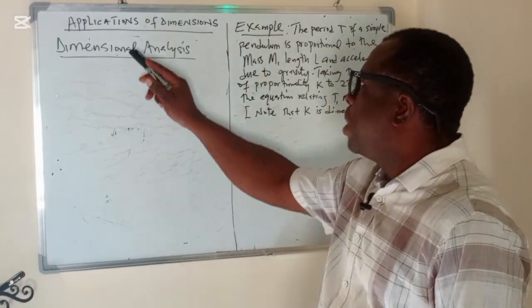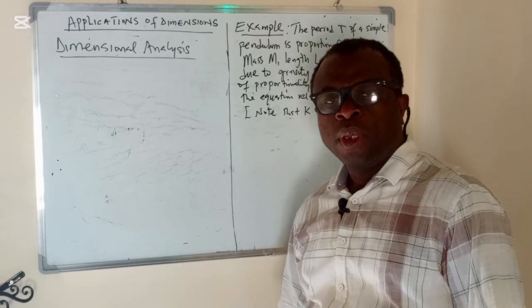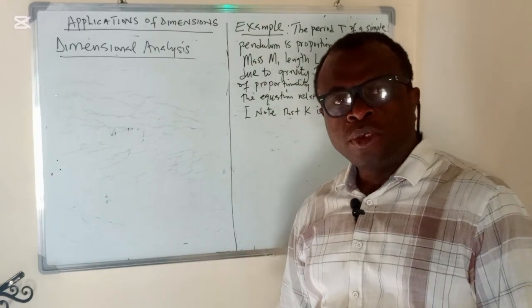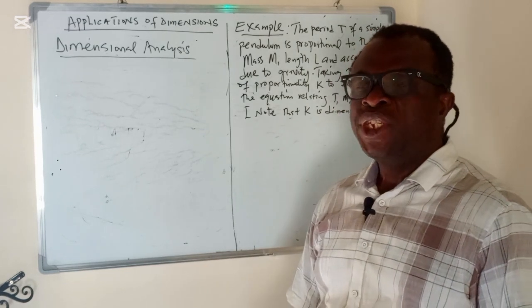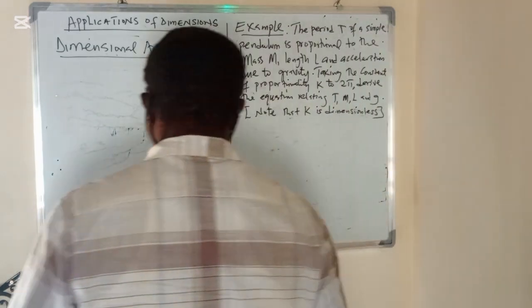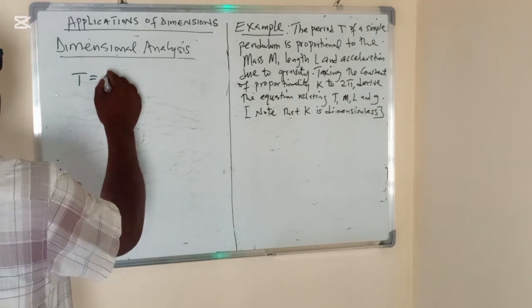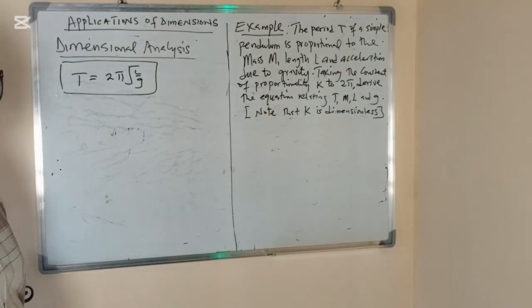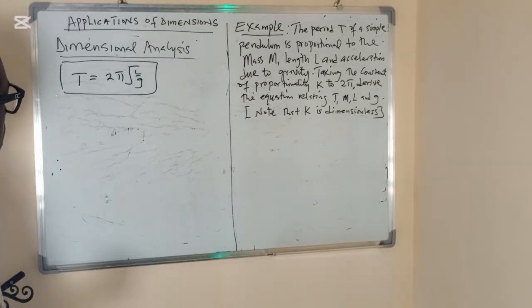Today we'll be looking at applications of dimensions, which uses the principles of dimensional analysis. In physics, dimensional analysis can be used to derive an equation, and we can also use it to check how correct that equation is. We know that the period of a simple pendulum can be calculated using the formula 2π√(L/g), and we can use dimensional analysis to derive this.